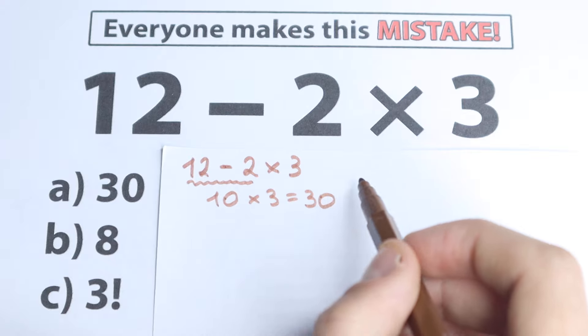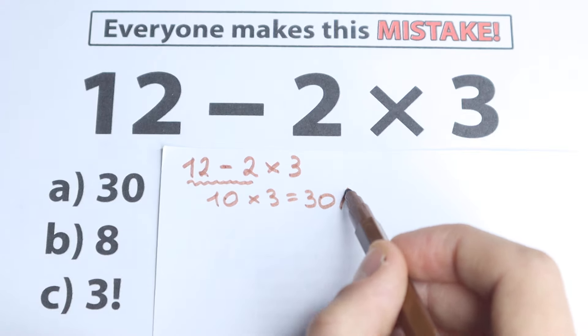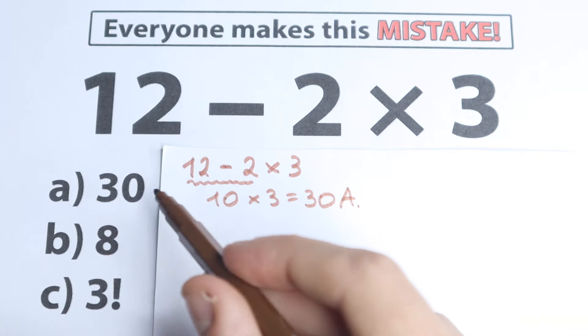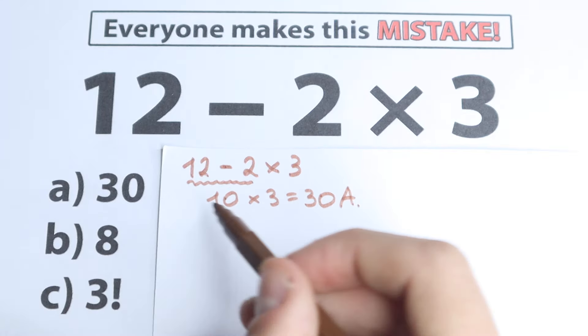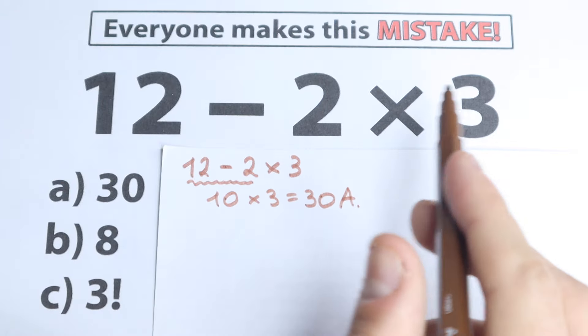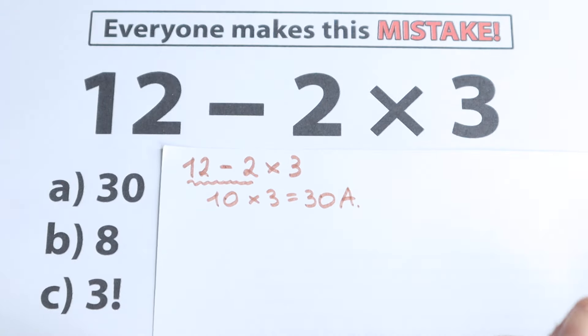So one part of students solves it like that and says option A is correct — we have 30. This is the obvious solution going from left to right.